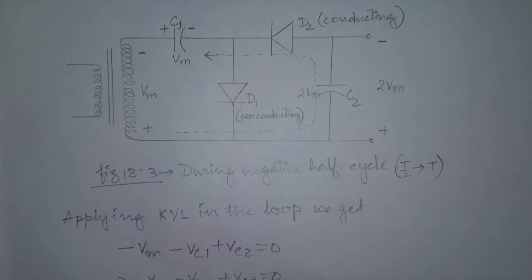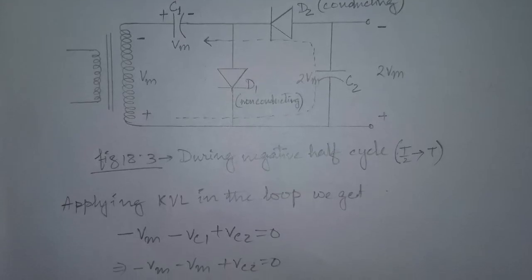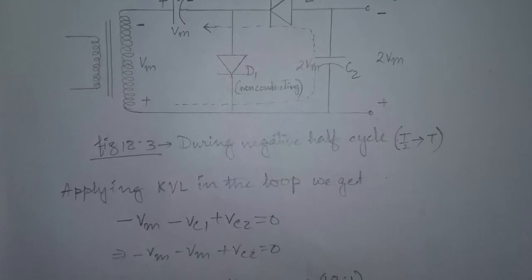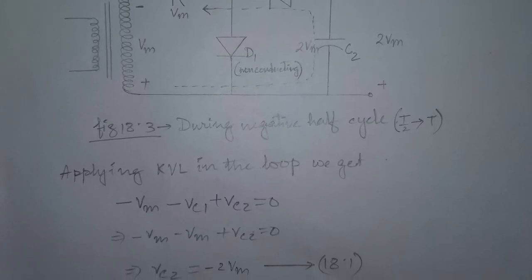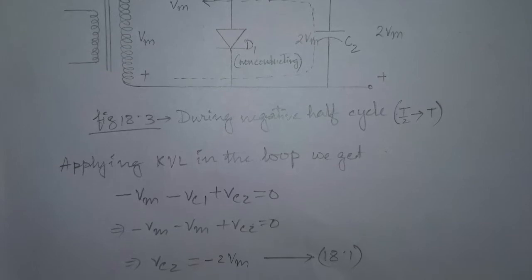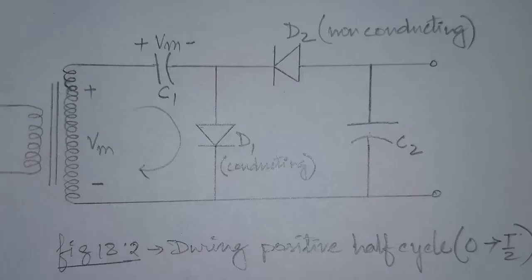During the negative half cycle of the transformer secondary voltage, D1 is cut off and D2 conducts, charging the capacitor C2. Therefore, applying KVL in the loop, we get voltage across capacitor C2 is equal to twice Vm.